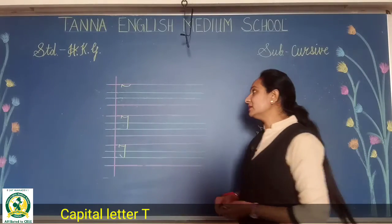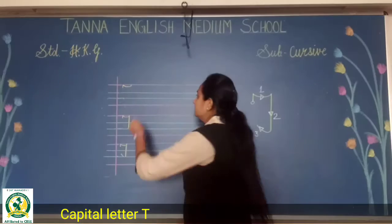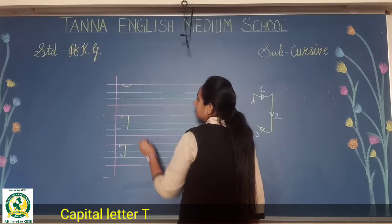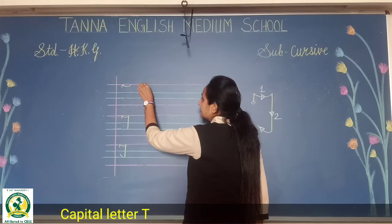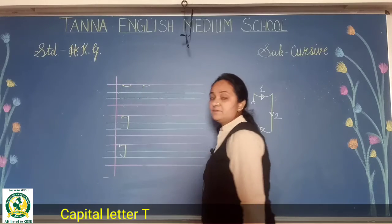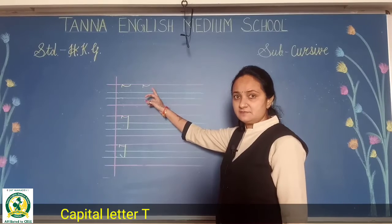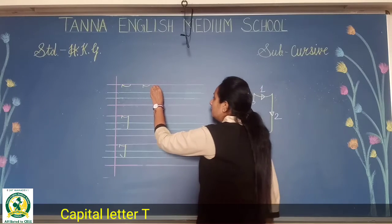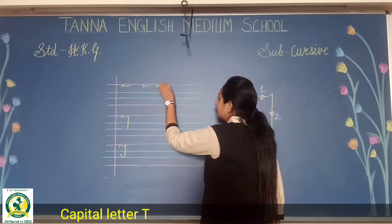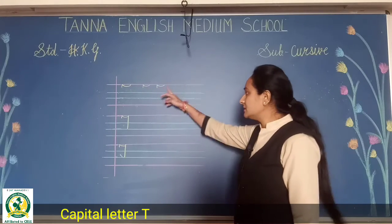Let us see the following steps. First step: chhoti si ek line karthe hai, aur yaha se aise goda, aise turn karna hai — okay, so this way. This is the first step. Again: chhoti si line karke yaha pe aise turn karna hai. This step you have to follow.